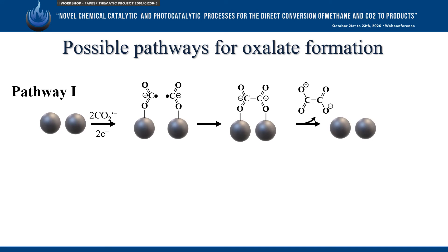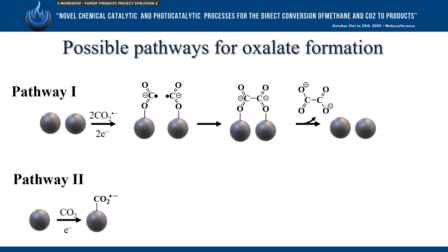Pathway 2 consists of a more generic mechanism and occurs on an electrocatalyst with low affinity for the CO2 radical anion. In this pathway, the CO2 molecule is adsorbed on the surface of the electrocatalyst to form the radical anion, which then desorbs from the metal surface and dimerizes to form oxalate in the solution.